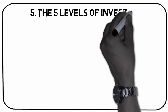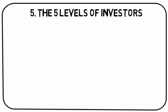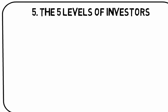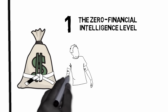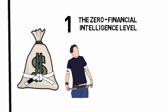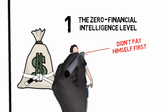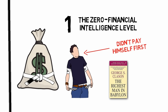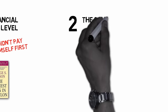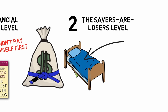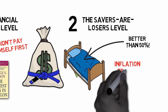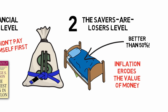Takeaway number 5: the five levels of investors. According to Robert Kiyosaki, there are five different levels of investors. Level 1 is the zero financial intelligence level — people who have nothing to invest at all. Each month their expenses are higher than their income, often because they forget to pay themselves first, which is the most fundamental strategy for wealth building taught in the classic The Richest Man in Babylon. Level 2 is the savers are losers level. Placing money under a mattress or in a low-interest bank account will put you in the top 50% financially, but it's not a solid plan because of inflation. Between 1980 and 2017, the value of the Swedish crown was reduced by 69%.